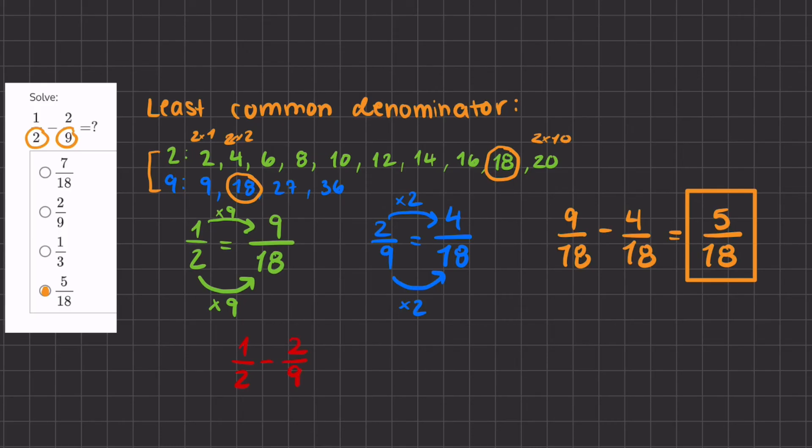Now to get a common denominator, you can multiply both of the denominators. 2 times 9, and that will be a common denominator for both of the fractions.